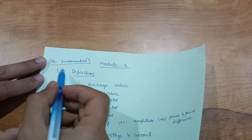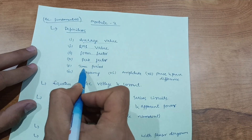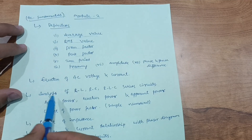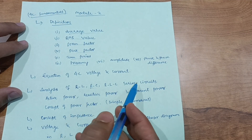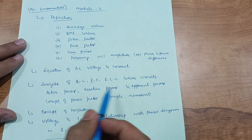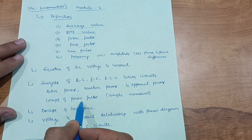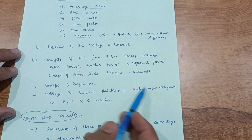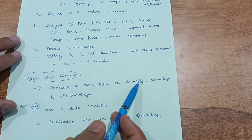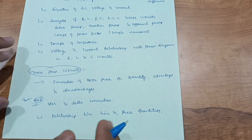Module 2 covers AC fundamentals across two chapters. Cover definitions like average value, RMS value, form factor, peak factor, time period, frequency, amplitude, phase, and phase difference. Then cover the equation of AC voltage and current, and analysis of RL, RC, and RLC series circuits — active power, reactive power, apparent power, and concept of power factor. Also cover impedance, phasor diagrams in R, L, and C circuits. Three-phase circuits — generation of three-phase AC, star and delta connection, and the relationship between line and phase quantities — is the most important part of Module 2.